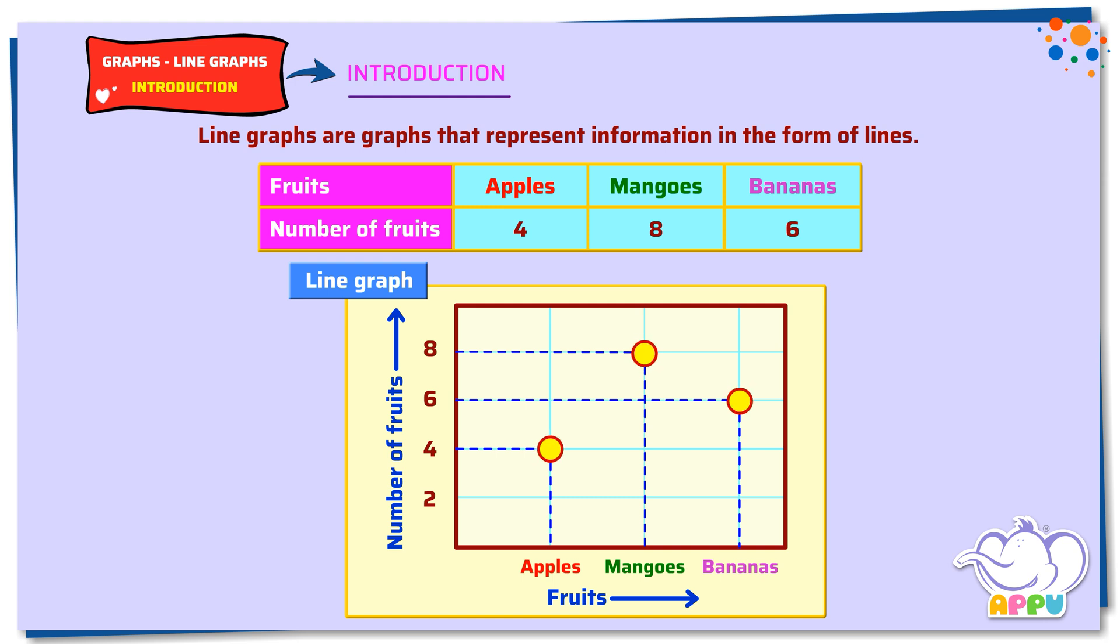Then we join the dots to get a line. This is a line graph representing the number of fruits.